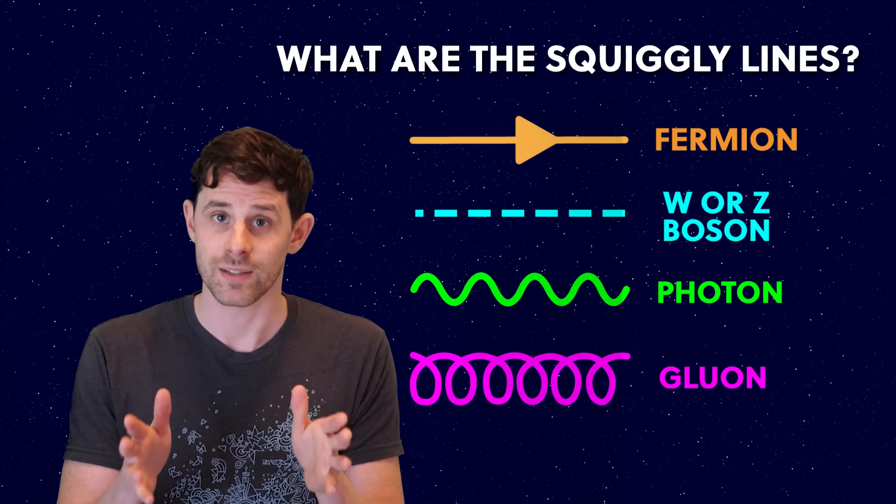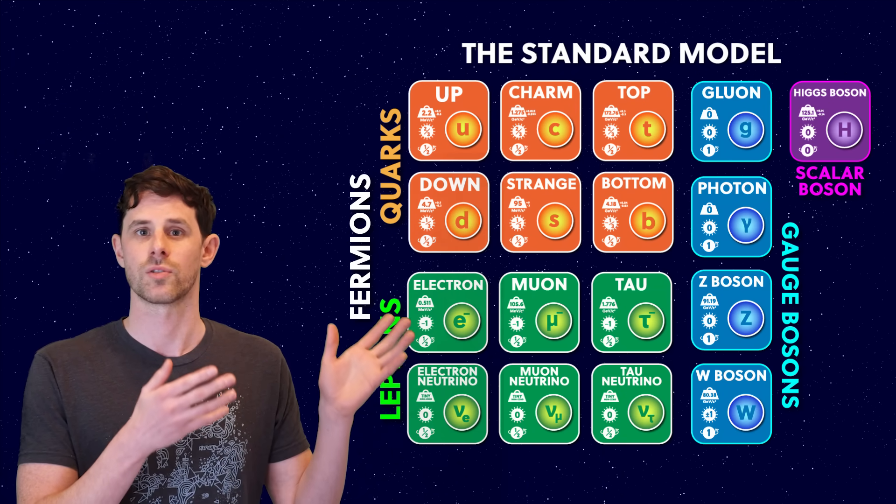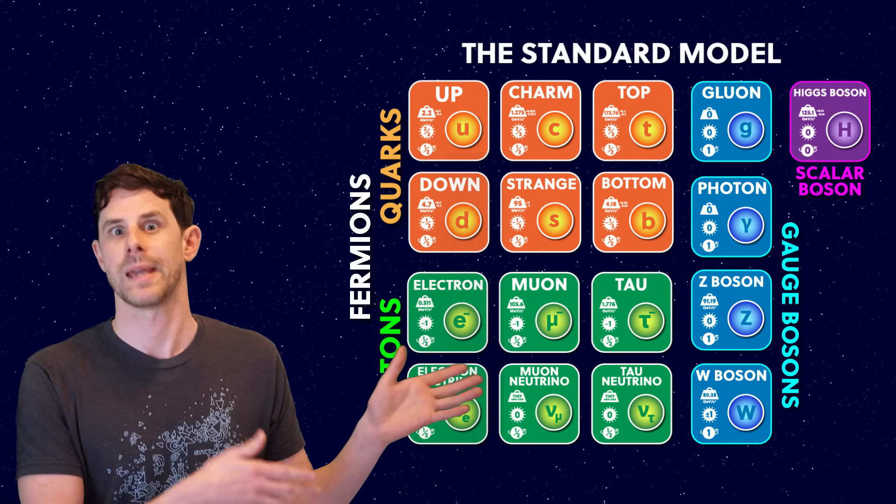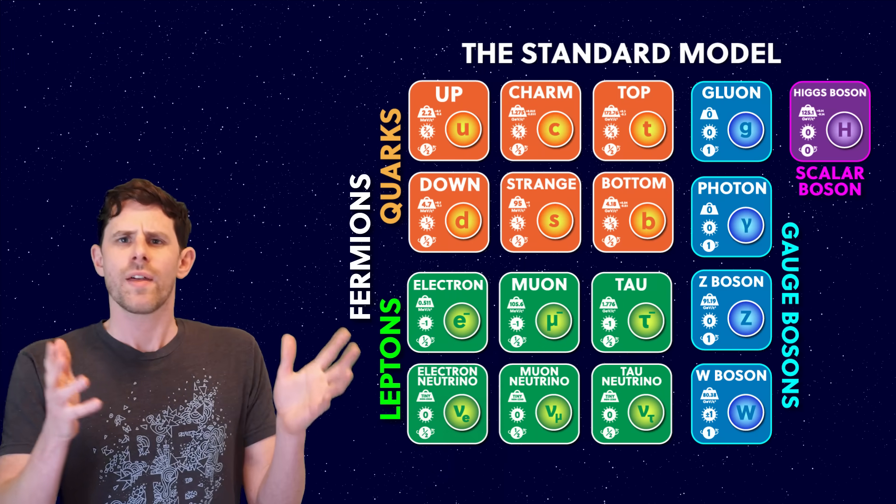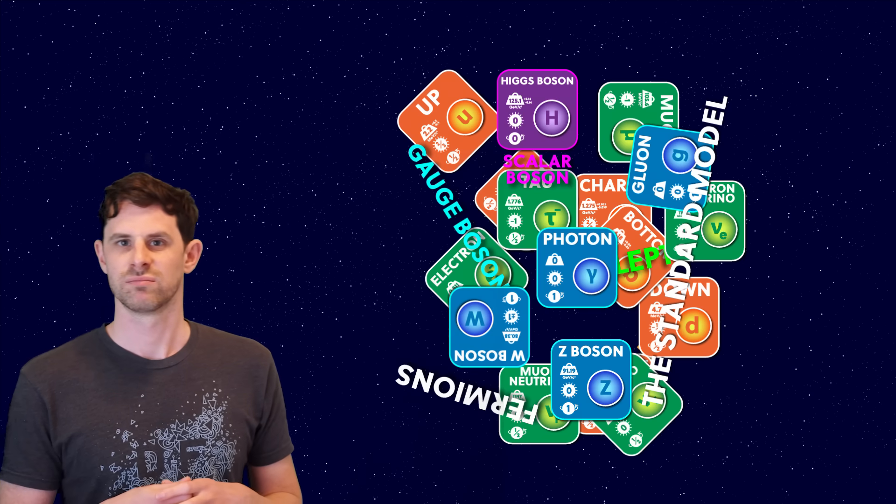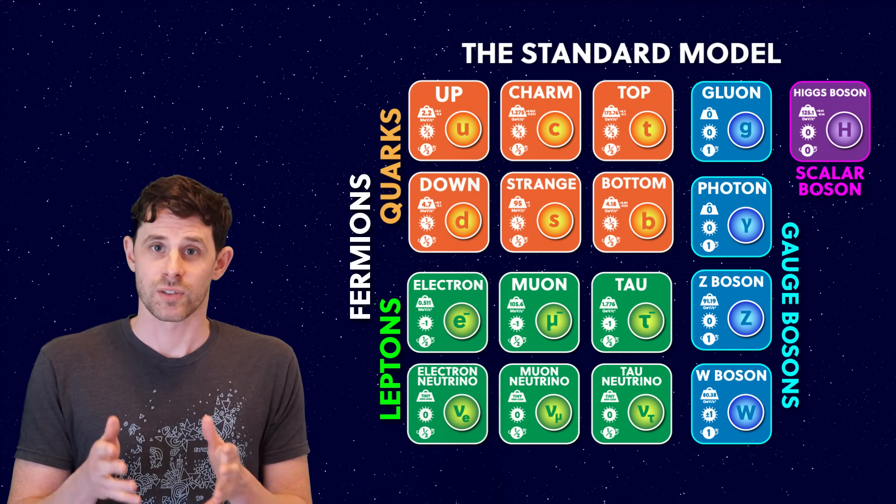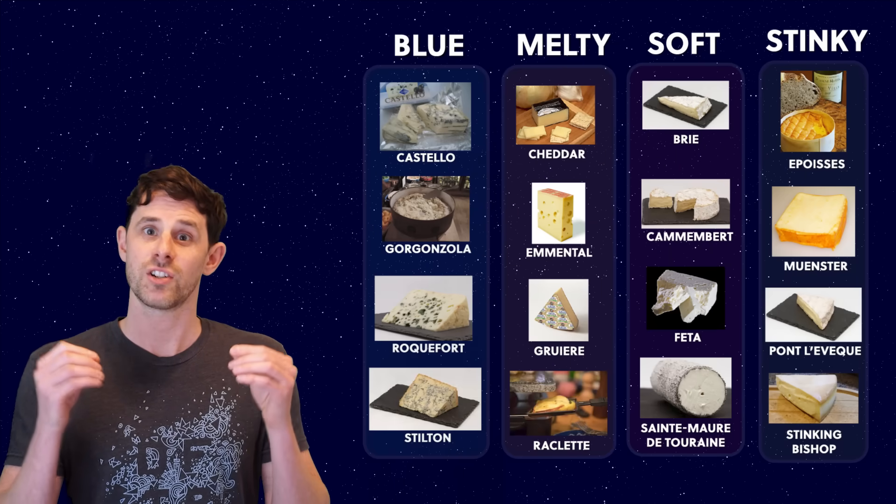Now I can only explain this if I show you all of the particles. So here they are. These are the fundamental particles of the universe that everything is made of, as far as we know so far. But why are they organised like this, instead of organised like this? It's because some particles share similar properties, so we can group them together, kind of like my cheese collection.